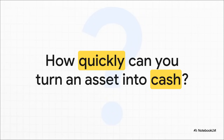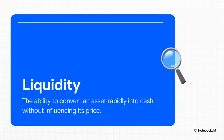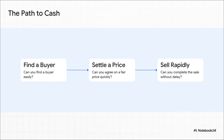There's another really important factor: how easy is it to get your money out when you need it? Just how fast can you turn an asset into cold, hard cash? That concept is called liquidity. It's all about being able to sell something fast without having to slash the price. High liquidity gives you freedom and options; low liquidity can mean you're stuck, even when you really need to make a move. Think of it as a three-part test: Is there someone ready to buy it? Can you both agree on a fair price? And can you get the deal done quickly? If yes to all three, you're looking at a pretty liquid asset.